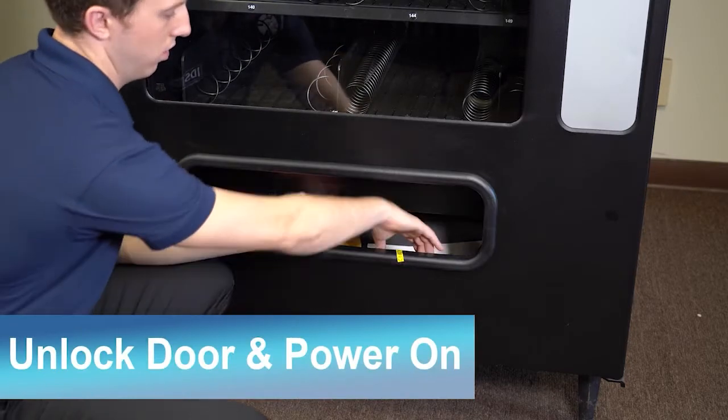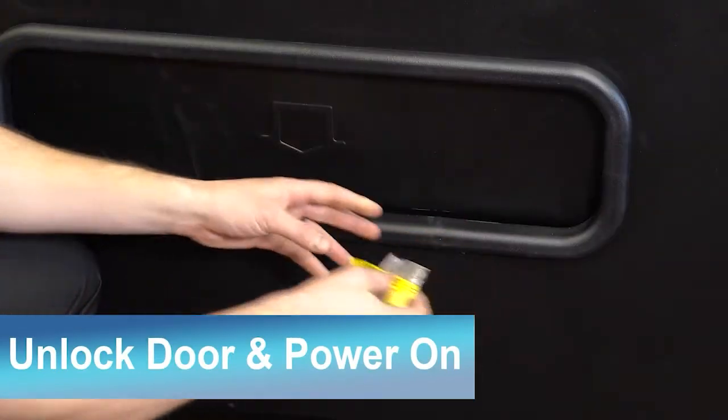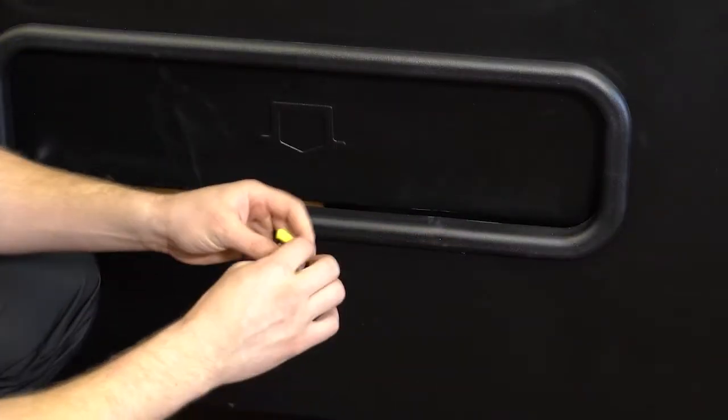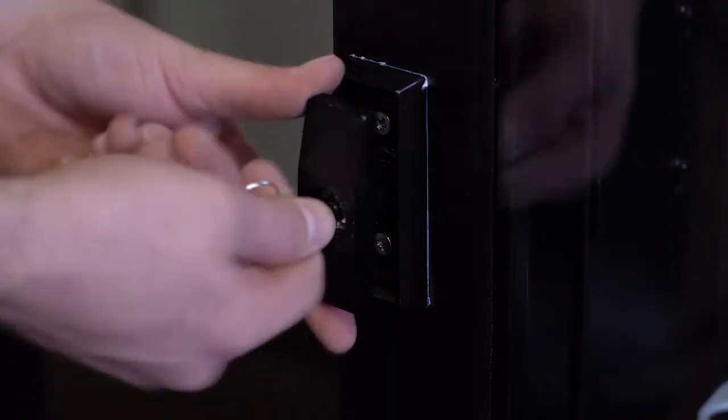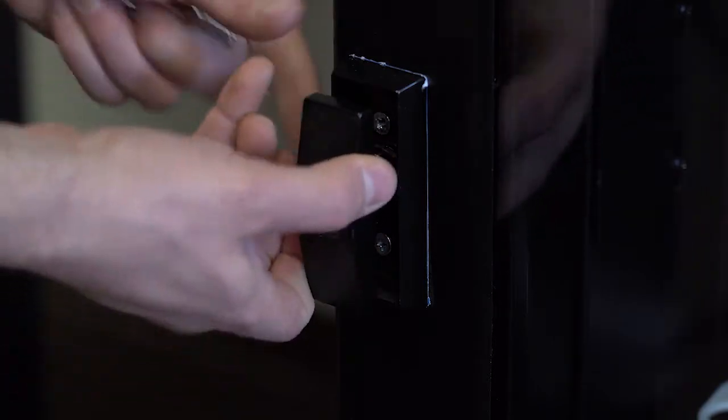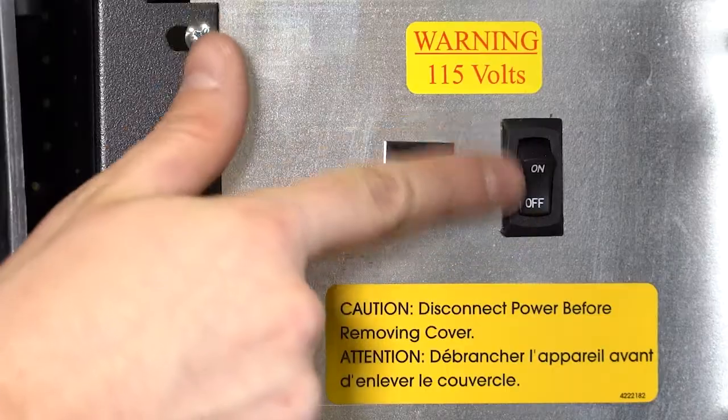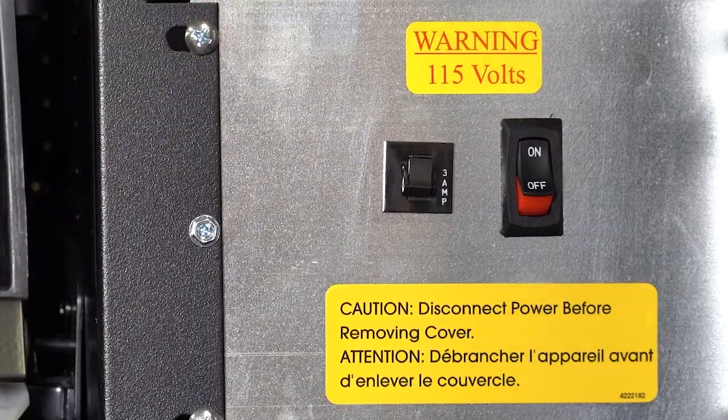Find the key taped to the delivery box. It will have yellow tape on it with the word key on it. Remove it from the plastic packaging. Unlock the door. The power switch is inside the machine. Power on by flipping the switch.